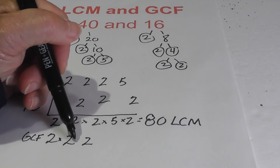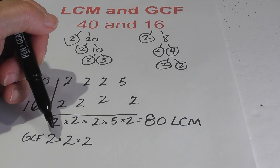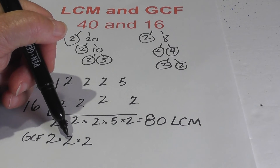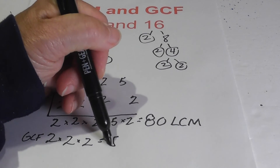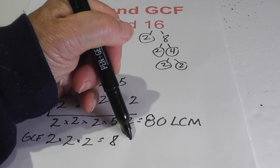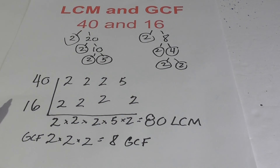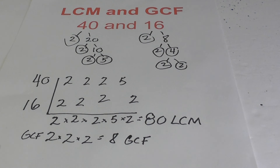Then you just multiply these together. 2 times 2 is 4, 4 times 2 is 8. So the GCF is 8.